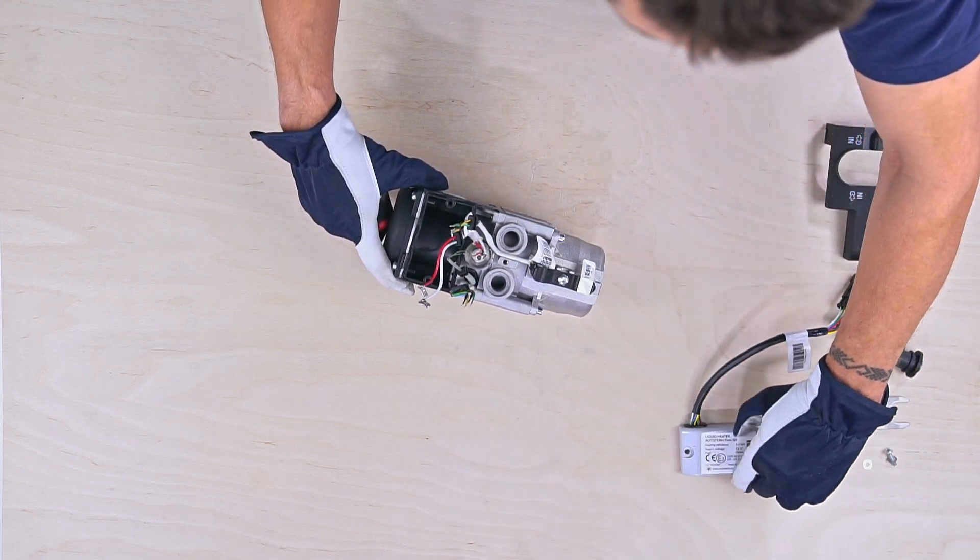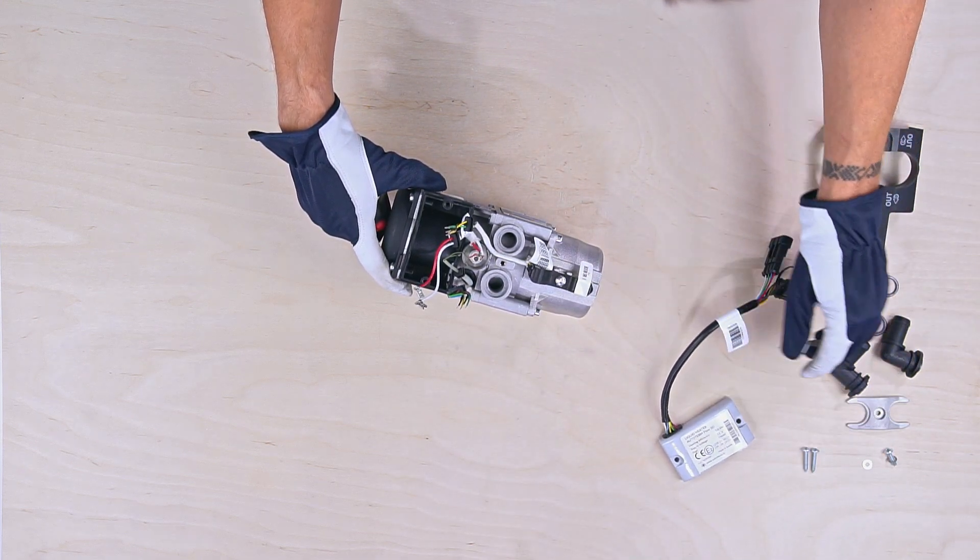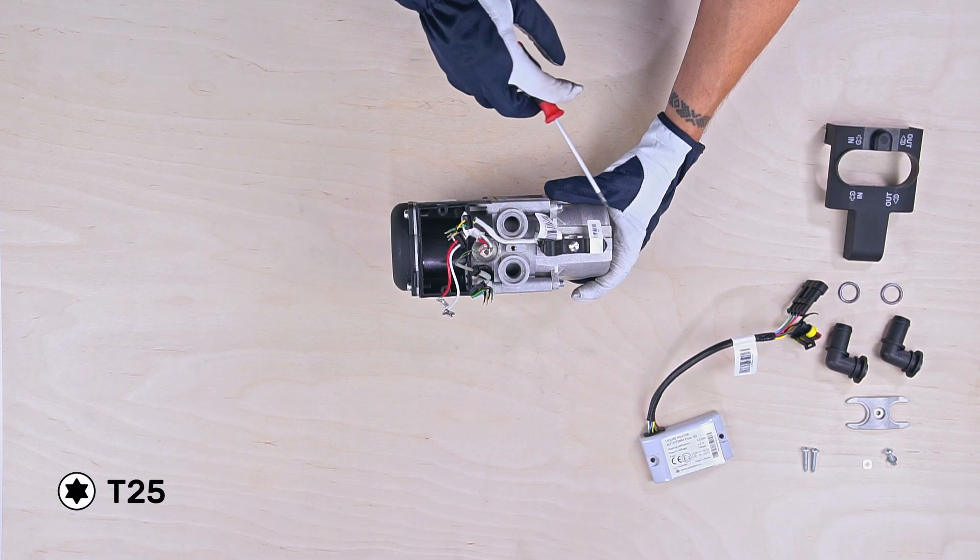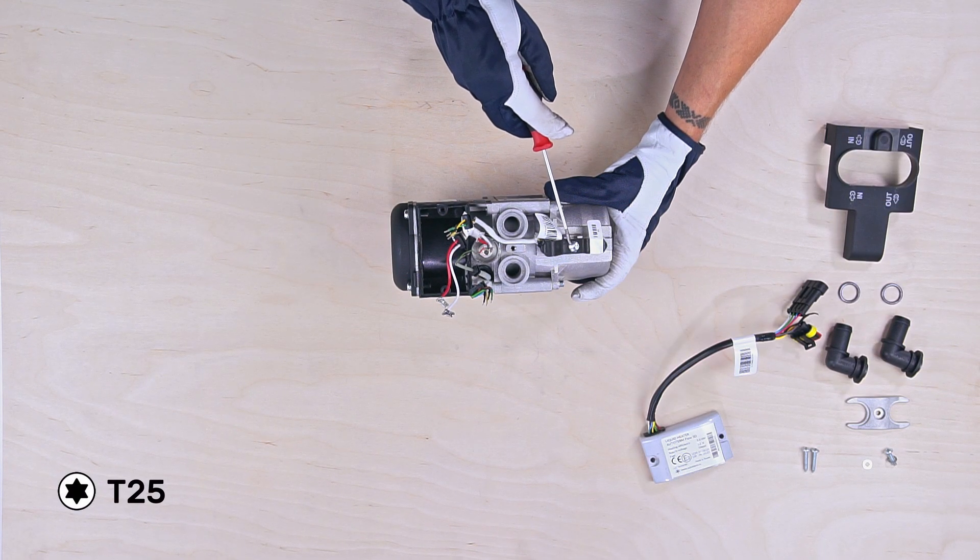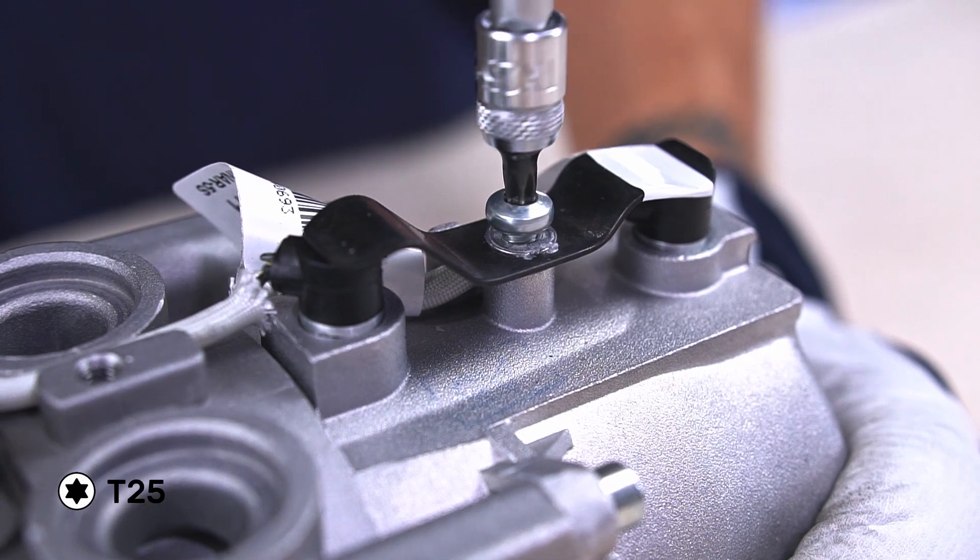Following this, we are going to remove the temperature sensor set. With the Torx T25 key, unscrew the clamp that holds the sensors in place.